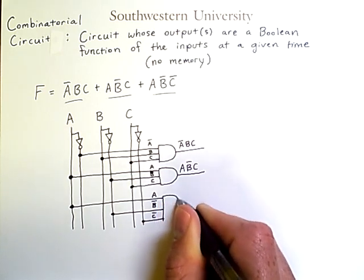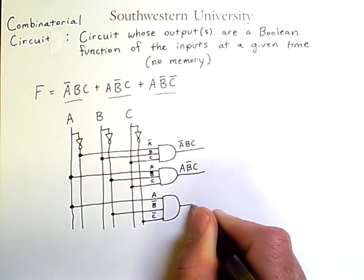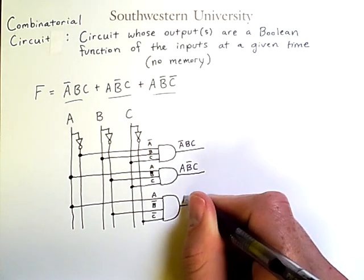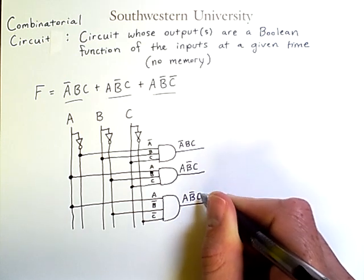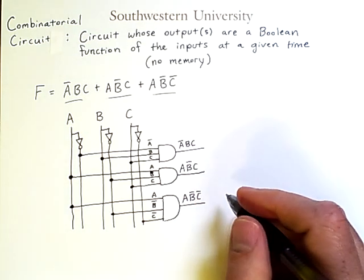Combine them with an AND gate. And the sub-expression is A and NOT B and NOT C.